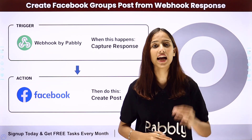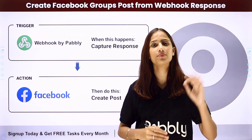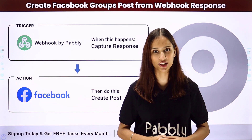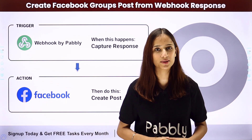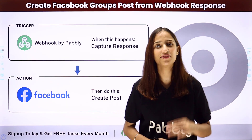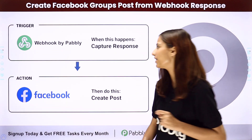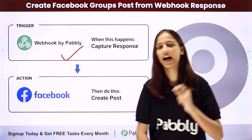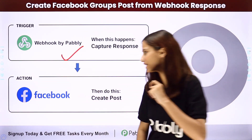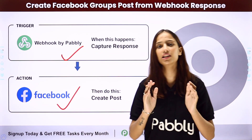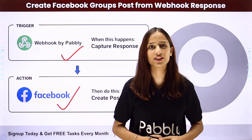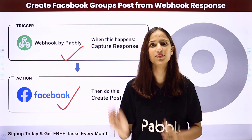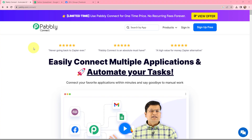To do this, I need to integrate both of these applications. For that, I will be using Pabbly Connect where my trigger application will be Webhook by Pabbly and my action application will be Facebook. So to learn how I set up this integration, follow me through the screen. In this video we will learn how you can create Facebook group posts from webhook response.